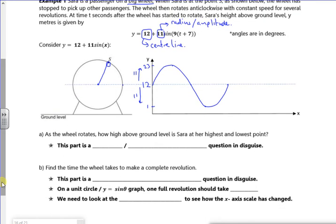So it says here, as the wheel rotates, how high above the ground level is the highest and most. So we've said that the max height is 23, which is going to be the centre line plus the amplitude, 23 metres. And the min will be 12 minus 11, is 1 metre.